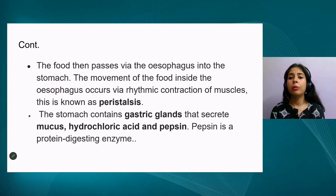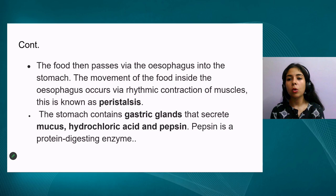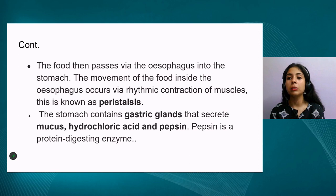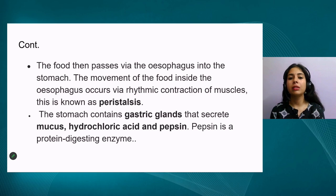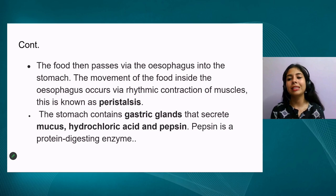With the help of the esophagus, food moves to the stomach. The esophagus, or food pipe, is made up of muscles which work by contraction and relaxation in a rhythmic manner, pushing food downward into the stomach. This rhythmic movement of contraction and relaxation in the esophagus is known as peristalsis.